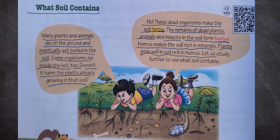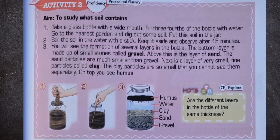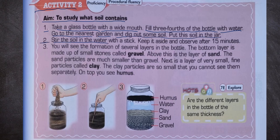Activity to study what soil contains: take a glass bottle with a wide mouth and fill three-fourths of it with water. Go to the nearest garden and dig out some soil. Put this soil in the jar, stir the soil in the water with a stick, keep it aside, and observe after 15 minutes. You will see the formation of several layers in the bottle.